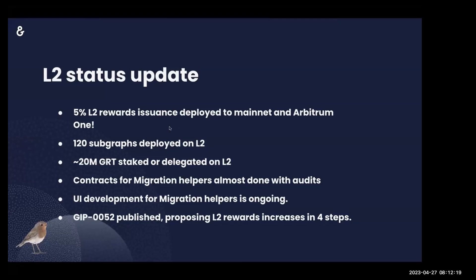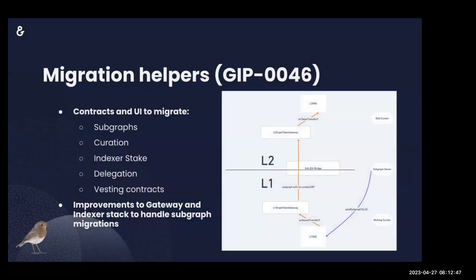We recently published GIP-52, which proposes increasing L2 rewards in four steps until we reach 100% on L2. At the end of this process, all token issuance and indexing rewards will happen on Arbitrum — at that point the migration will be considered complete with very little if any activity remaining on L1.